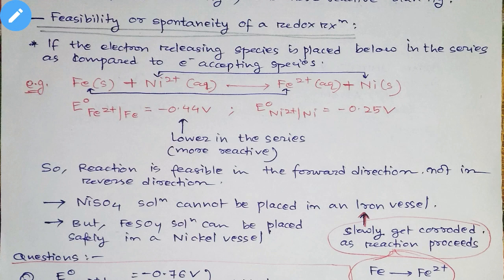We know that the negative E⁰ values are placed in the lower part of the series, and the positive values are placed on the top. So between iron and nickel, you can see that iron has the more negative value, so it is placed lower in the electrochemical series. You can check this in your NCERT book as well — you will find the electrochemical series there.